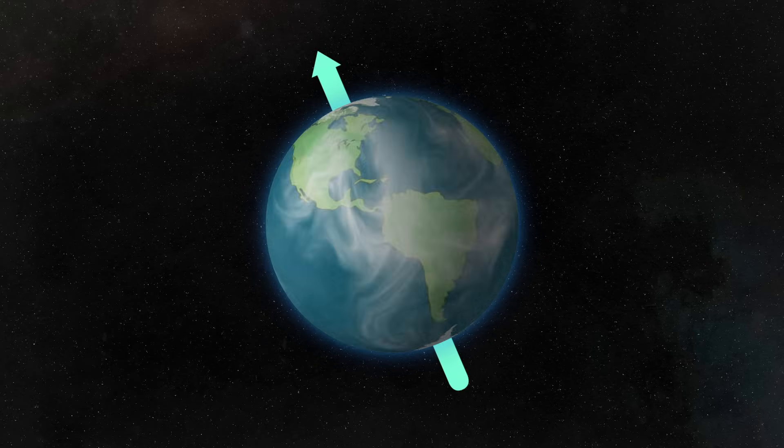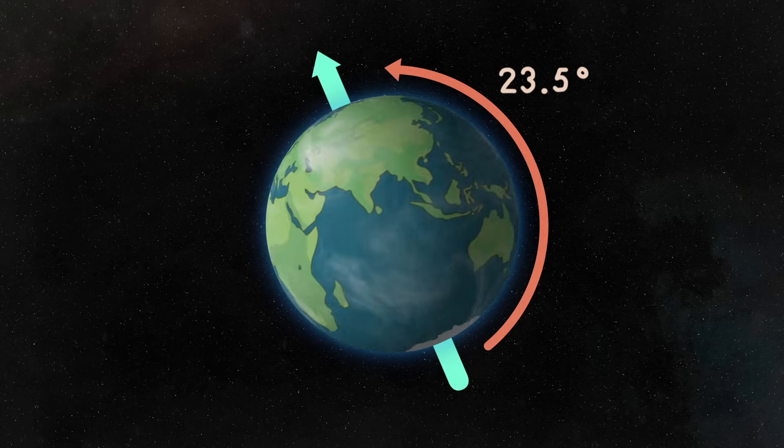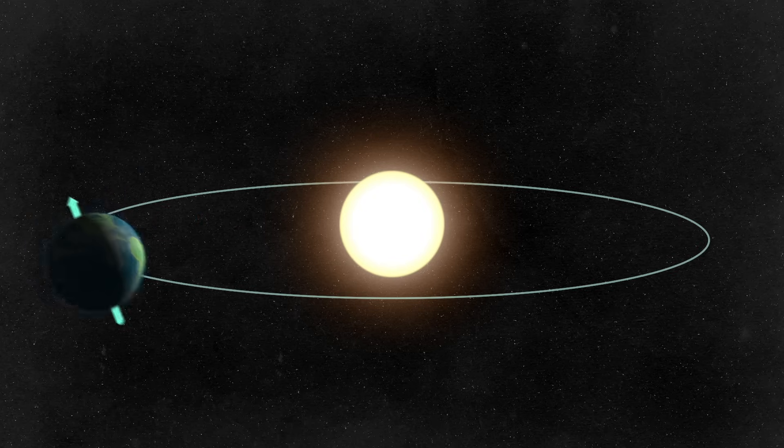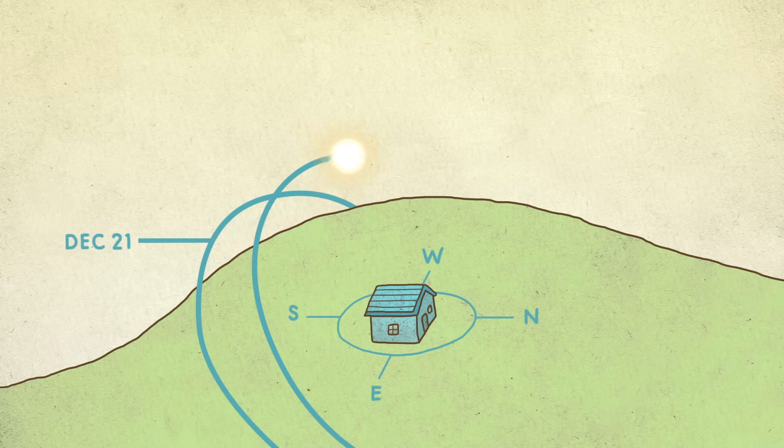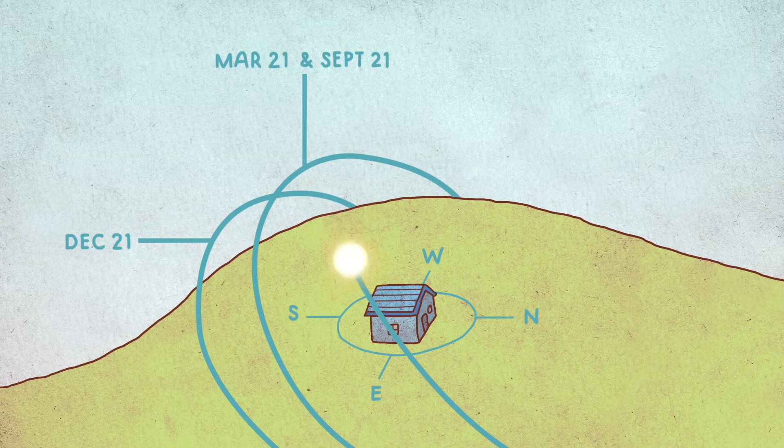The Earth spins on an axis that's tilted 23.5 degrees from vertical. At the same time, the Earth revolves around the sun with the axis always pointing in the same direction in space. Together with the tilt, the spinning and revolving causes the number of hours of daylight in a region to change as the year goes by, with more hours in summer and fewer in winter.